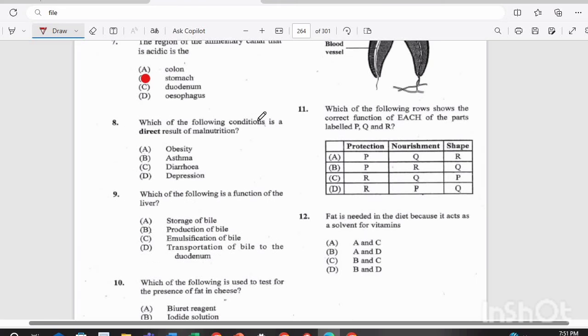Question eight. Which of the following conditions is a direct result of malnutrition? Is it A. Obesity, B. Asthma, C. Diarrhea, or D. Depression? The answer there is A. Obesity.